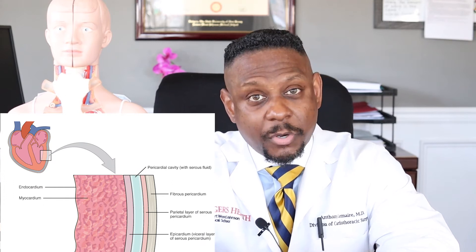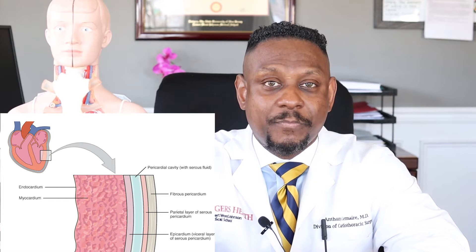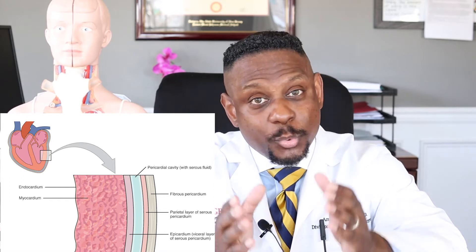The pericardium is a two-layered membrane that surrounds the heart. There's an outer membrane which consists of a fibrinous layer, and there's an inner serous layer. In between the two serous layers is where the pericardial fluid stays.